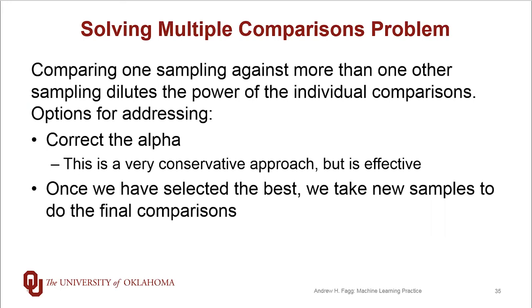So Sidak correction and Bonferroni correction are the two procedures for doing this. As I said, these are both very conservative approaches, but they are very effective. The other possibility is that once we've selected the best of a set of things, then we go out, back out to the world, draw some new data and use those samples to make our final comparisons that we have to make.